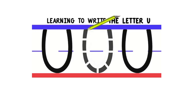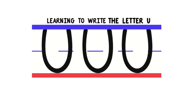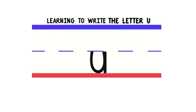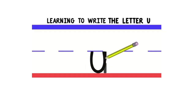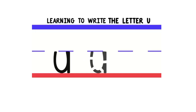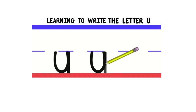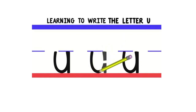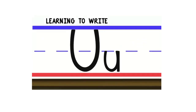Now let's move on to lowercase or little U. To write lowercase U, we'll start in the middle and go down. Then we'll curve around and go up. Then we'll do a straight line down. Good job. Let's do that again. We'll start in the middle and go down, then curve and go back up, then do a straight line down. Good job. Now you try. Good job. Now you know how to write the letter U.